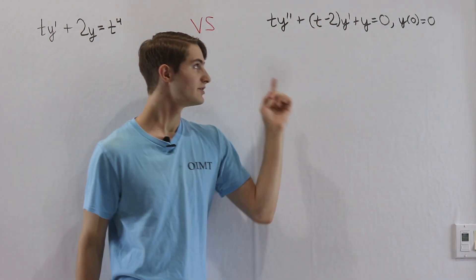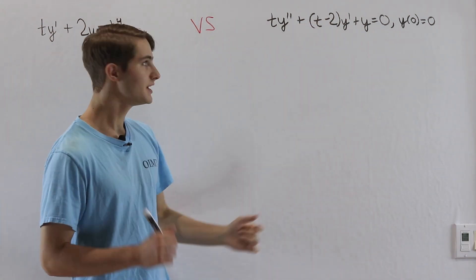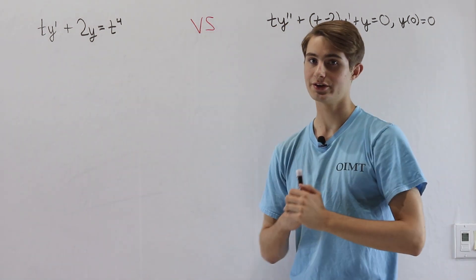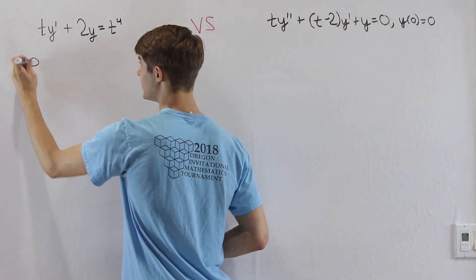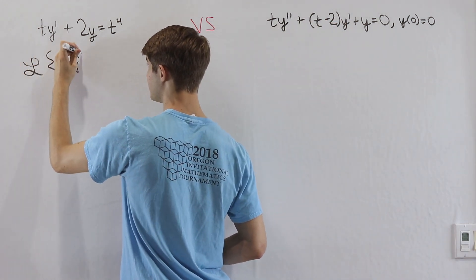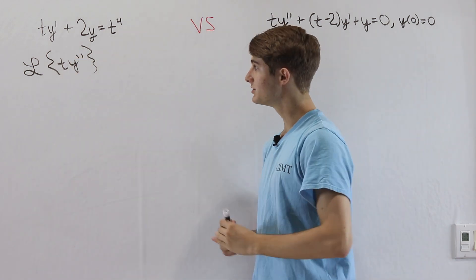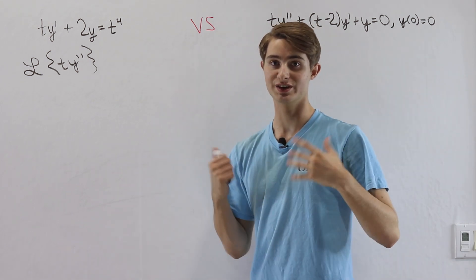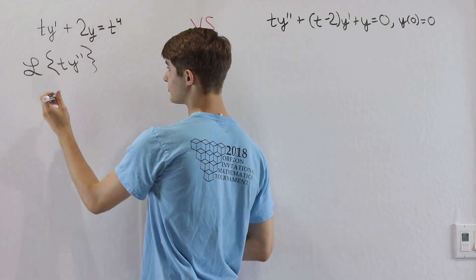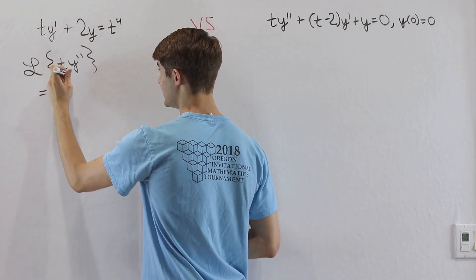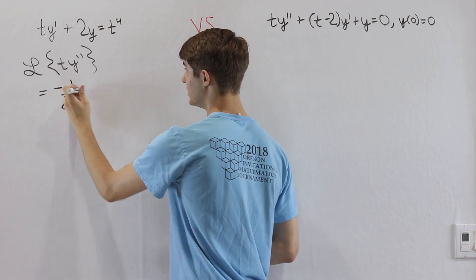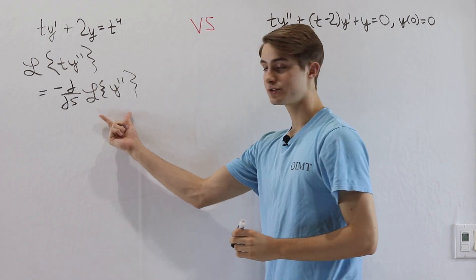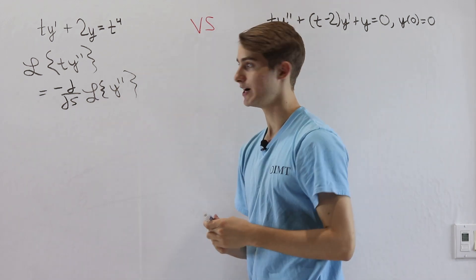Now let's solve the second differential equation using Laplace transforms. We'll take the Laplace transform of each individual term on the left side and then combine them. We start with the Laplace transform of t times y double prime. There is a specific formula: the Laplace transform of t times some function equals negative the derivative with respect to s of the Laplace transform of that function — in this case, y double prime.